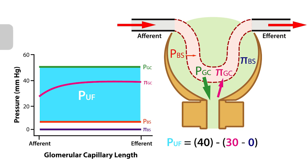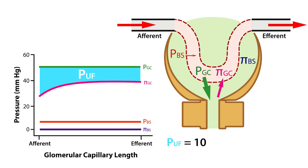So, with a net hydrostatic pressure of 40 mmHg and a net oncotic pressure of 30 mmHg, the net ultrafiltration pressure equals 10 mmHg across the length of the glomerular capillaries. In simpler terms, the net ultrafiltration pressure is equal to the net hydrostatic pressure minus the net oncotic pressure.